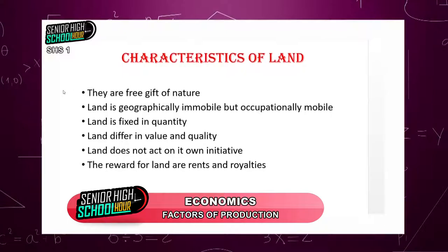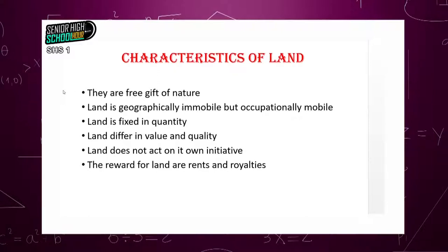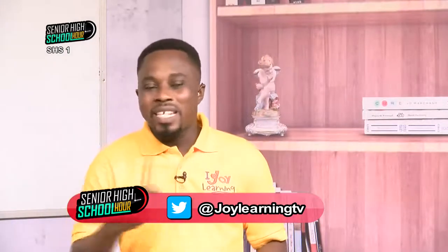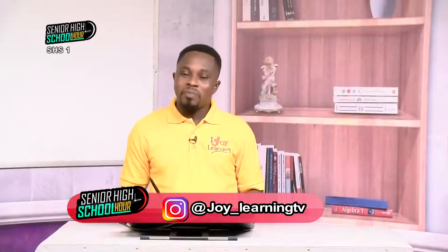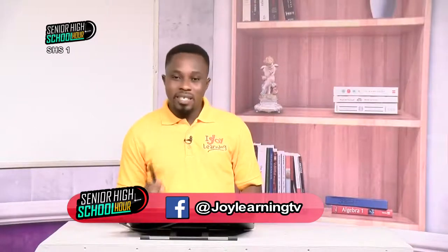Land is fixed in quantity — in other words, the supply of land is fixed. With all the scientific knowledge and technology we have, we've not been able to create land to add to the existing land in the world. Sometimes technology tries to improve land supply in a given area by reclaiming land from the sea, but if you reclaim land from the sea at a particular point, the sea moves to cover another land at a different point. So land in total is fixed in quantity — we cannot add anything to the supply of land.